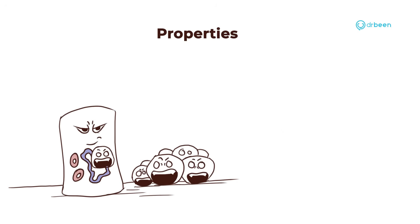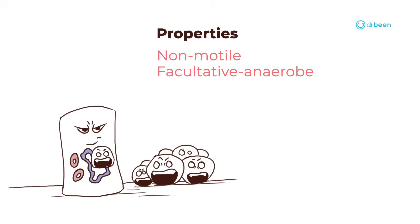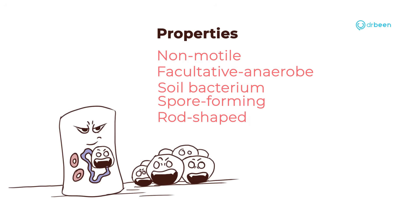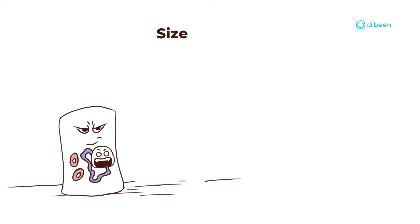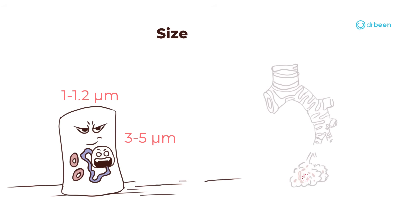Now let's talk a bit about its properties. Bacillus anthracis is a non-motile, facultative anaerobic soil bacterium that is spore-forming, rod-shaped, and gram-positive. It is the size of 3 to 5 micrometers long and around 1 to 1.2 micrometers wide. Hence it can easily travel down to the alveoli.